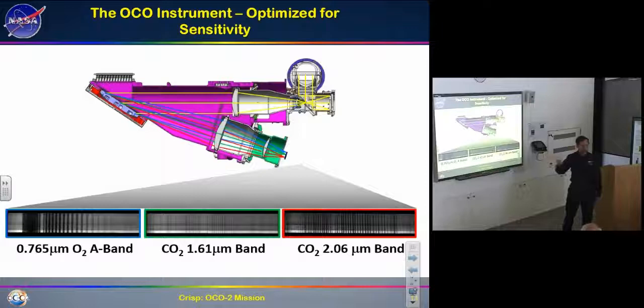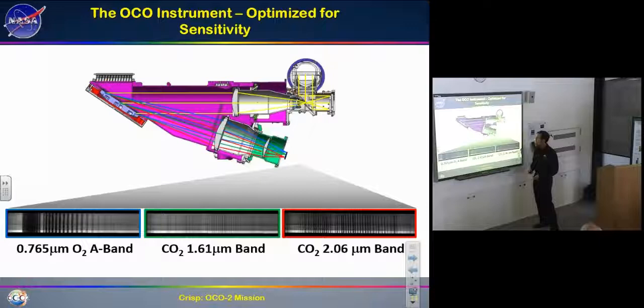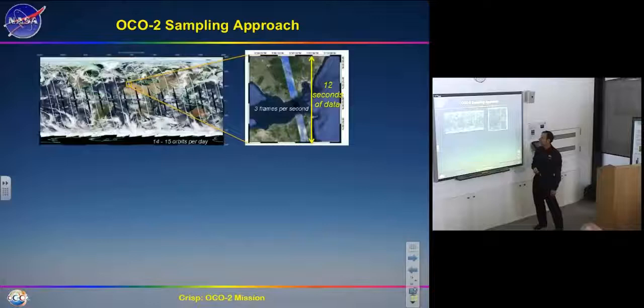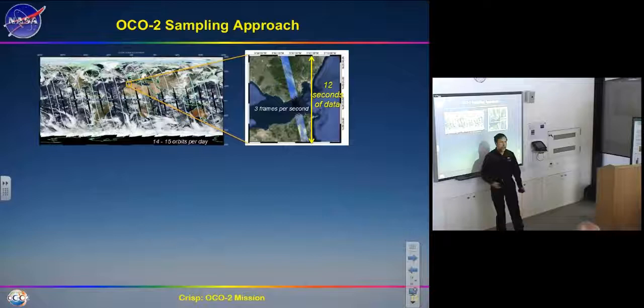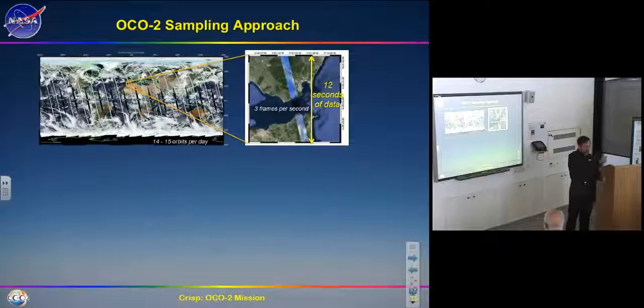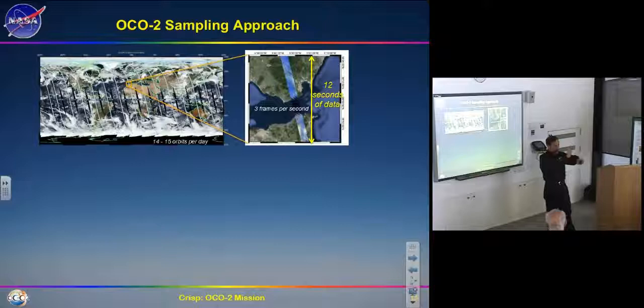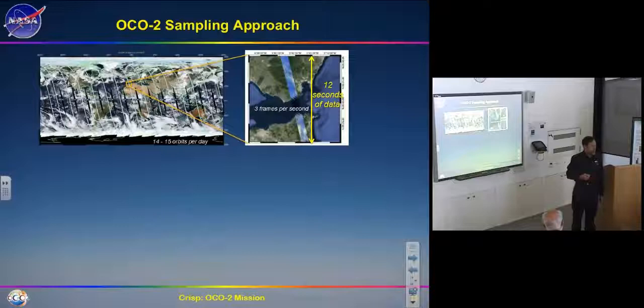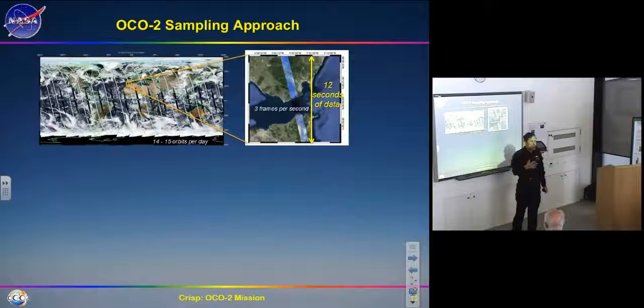The spacecraft orbits the Earth once every 100 minutes — 14.5 orbits per day — in a sun-synchronous orbit at 1:30 in the afternoon, so we always see the entire Earth at that time. Another sun-synchronous satellite right behind us is Aqua, which carries MODIS, a wide-swath imager that makes images of clouds and surface properties. We use MODIS to check whether we're looking at cloudy sky, since we can't use cloudy spectra for CO2.